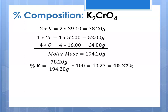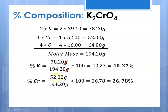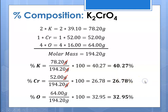For each element: percent potassium is potassium's contribution in the formula divided by the molar mass times 100, giving 40.27%. Percent chromium is chromium's contribution divided by the molar mass, giving 26.78%. Percent oxygen is oxygen's contribution divided by the molar mass times 100, giving 32.95%. Note that grams cancels out in each case. So the percent composition of potassium chromate is 40.3% potassium, 26.8% chromium, and 33.0% oxygen.